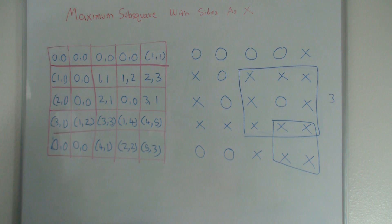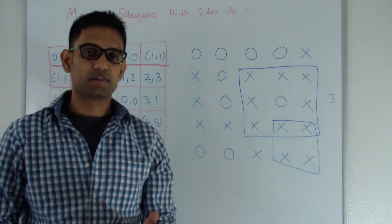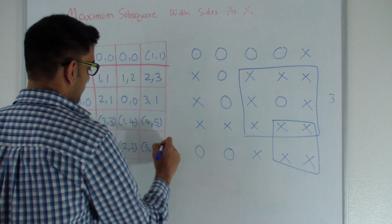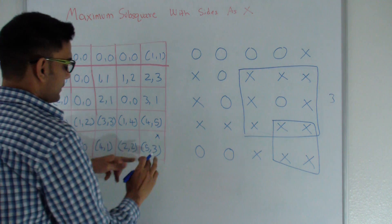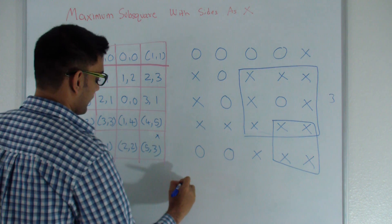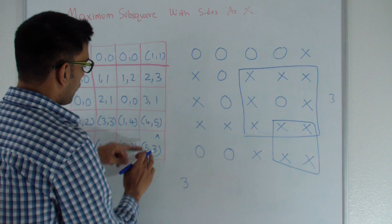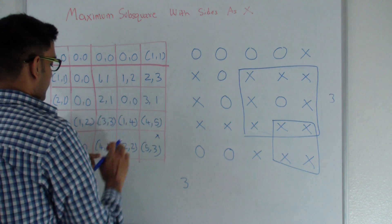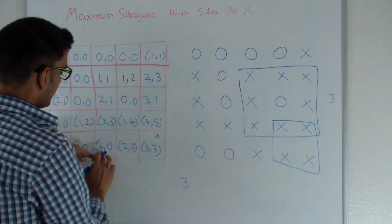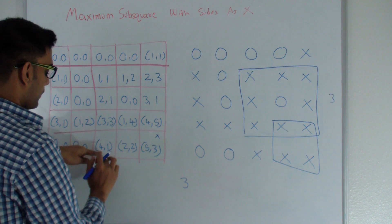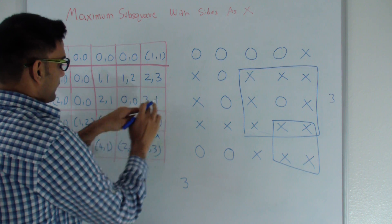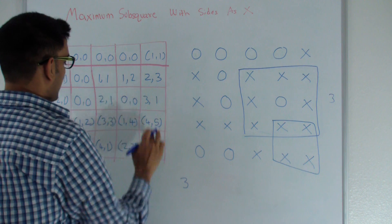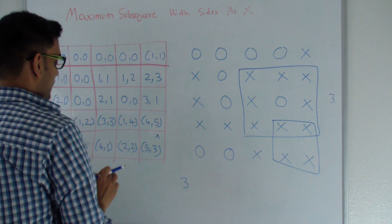We are done filling up our matrix. Now the question is how do we find the largest sub-square matrix such that all the sides are made up of X's. We start from the bottom-right corner. Here I find the minimum of my vertical length and horizontal length, which is 3. I go up 3 steps and left 3 steps to reach two corner points. If my vertical length at the top-left corner is greater than or equal to 3 — which is true, it is 4 — that's great. But my horizontal length there is only 1, which is not greater than or equal to 3. So from this point I cannot find a 3×3 square matrix with all sides made of X's.